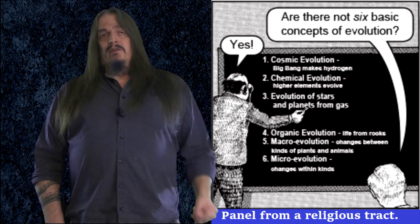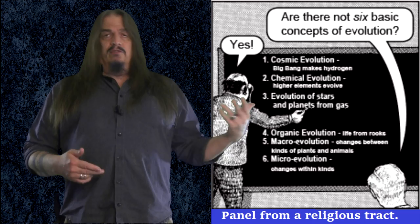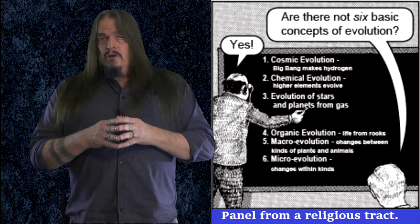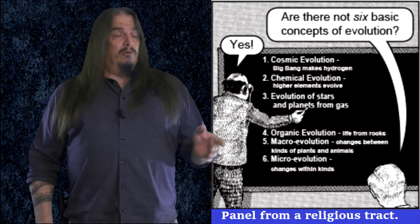One of the misdefinitions believers use is the idea that evolution is philosophical naturalism, every science related to the origins of anything, including theories of cosmogony, physics, and chemistry, that have nothing to do with the actual theory of evolution. So the biggest challenge explaining evolution to creationists is getting them to understand what it is as opposed to what it's not.